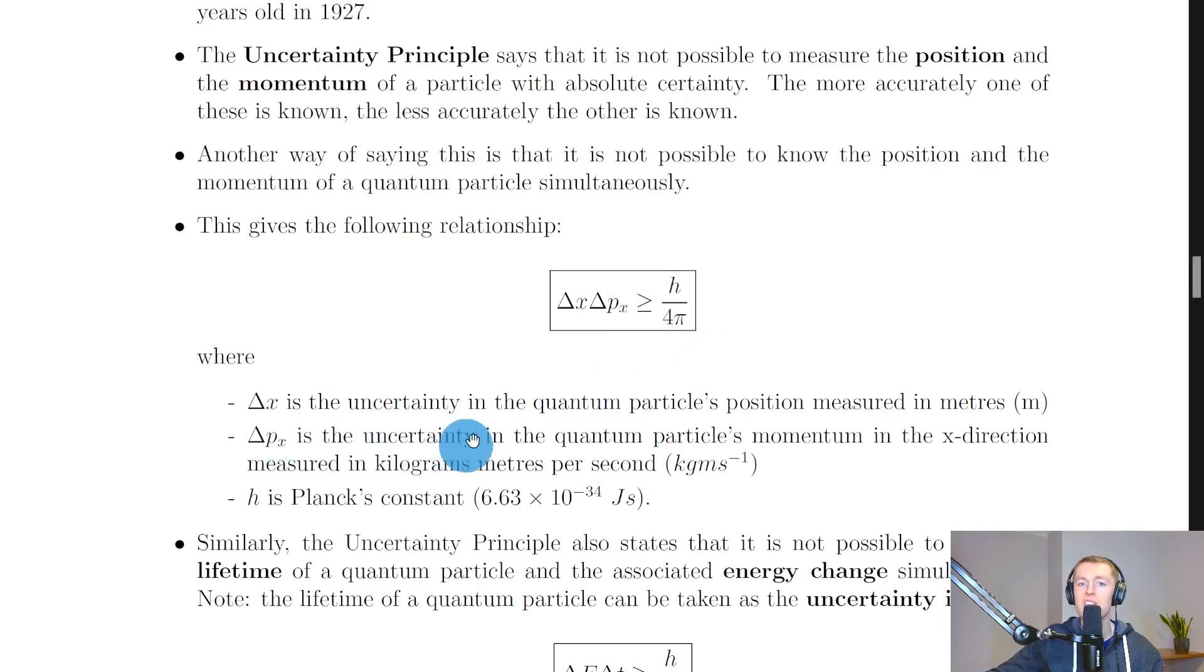Where delta x is the uncertainty in the quantum particle's position measured in meters, delta px is the uncertainty in the quantum particle's momentum in the x direction measured in kilogram meters per second, and lastly, h is Planck's constant. But this means that if you're asked to calculate the minimum uncertainty in position or the minimum uncertainty in the particle's momentum in the x direction, then you would take this to be equal to h over 4 pi. And that's commonly what you're asked to do in questions. You're asked to find the minimum uncertainty. So it means taking equals because that is the lower limit of this inequality.